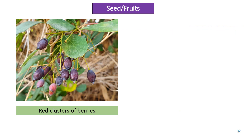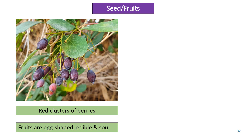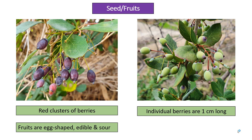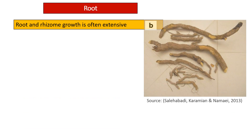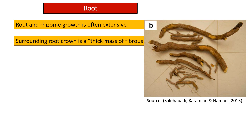Seeds or fruits: Berberis have red clusters of berries. Fruits are egg-shaped, edible but sour. Individual berries are 1 cm long. There are 1 to 3 black seeds per berry.